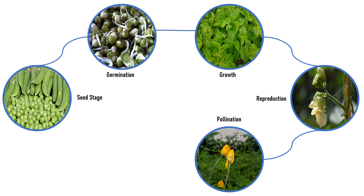Brightly colored petals, strong smell, nectar and pollen attract pollinators. Flowers are specially adapted to attract their specific pollinators. Pollen sticks to the legs and wings of insects that go from flower to flower for nectar and pollen, which they use as food. Pollen also sticks to the fur of animals and even to the clothes of humans. Wind blows pollen which lands on other flowers. This is the beauty of pollination.